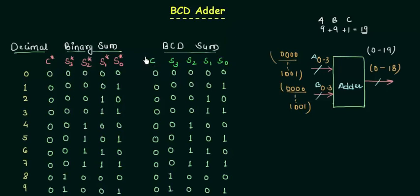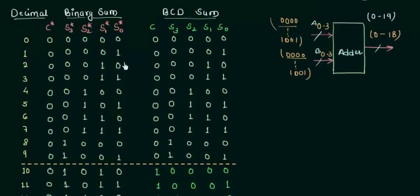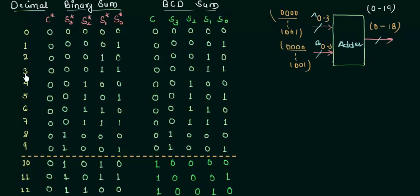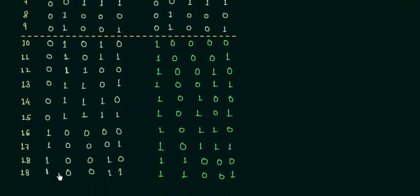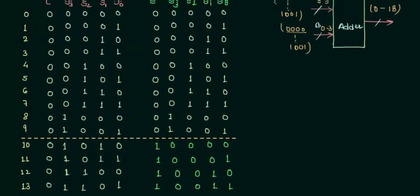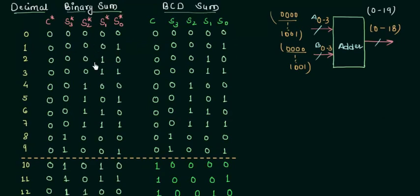We just want the logic to convert the binary sum to the BCD sum, and once we have it we will implement it. Moving to the table: the output varies from 0 to 18, so we have decimal numbers 0 to 18 with their binary sum and BCD sum. One important thing you can see is that from 0 to 9 the binary sum is equal to the BCD sum.